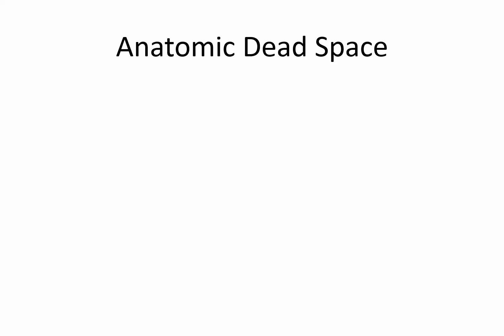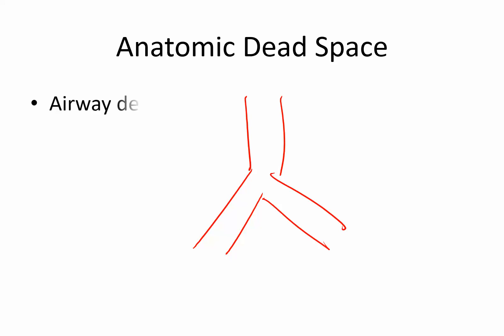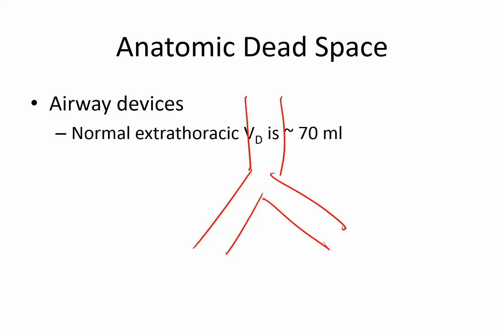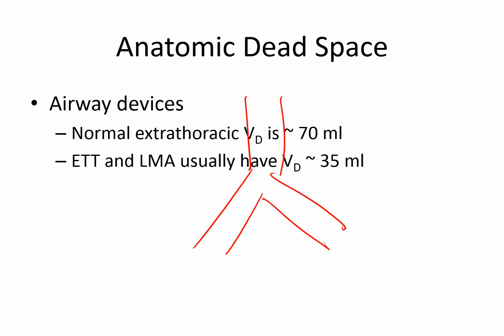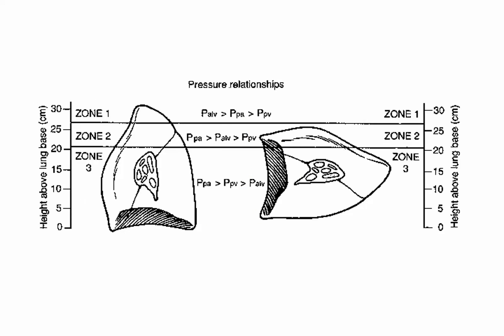Anatomic dead space is essentially the trachea, main stem bronchi, and conducting airways down to where gas exchange occurs. Airway devices can alter anatomic dead space: the normal extrathoracic dead space is about 70 milliliters, but with an endotracheal tube or LMA it is usually about 35 milliliters. This is interesting because most people incorrectly say that an endotracheal tube or LMA increases dead space — when in fact it decreases it. Bronchodilators can also cause an increase in dead space.